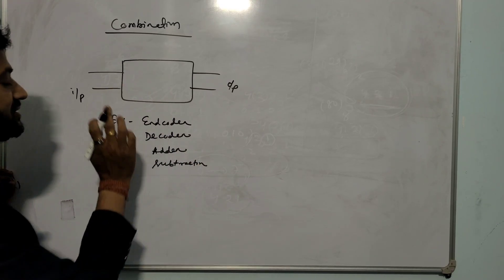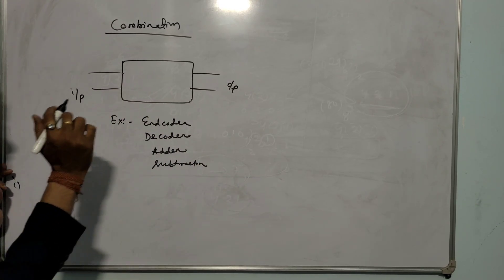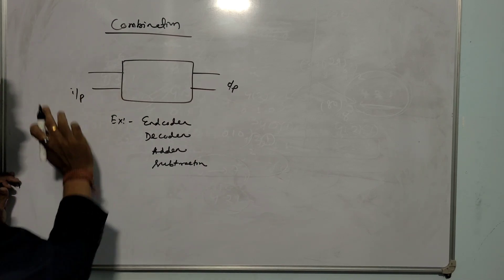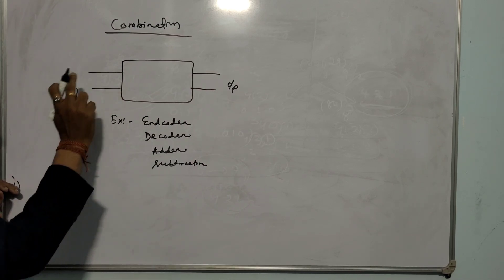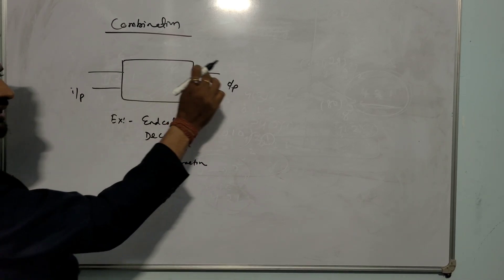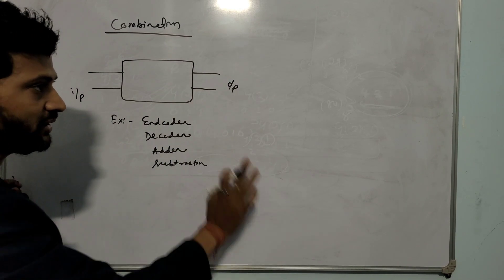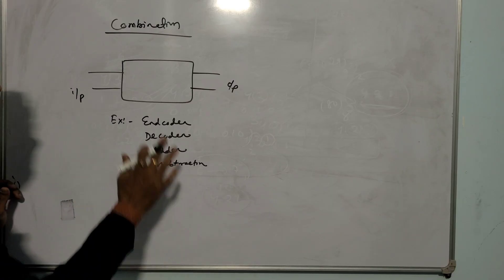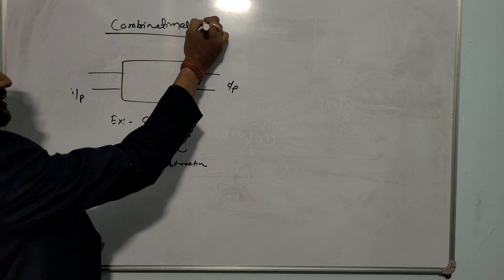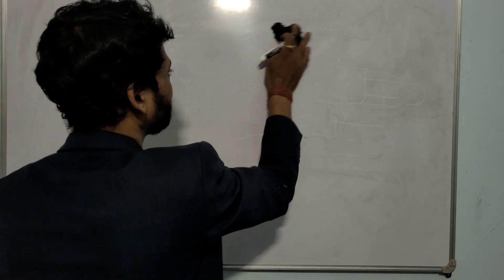These are examples of combinational circuits. The output directly depends on the input — if I change some parameter on the input side, the output side will be affected. That is called a combinational circuit.